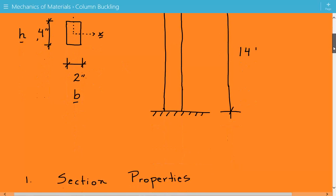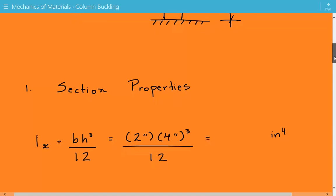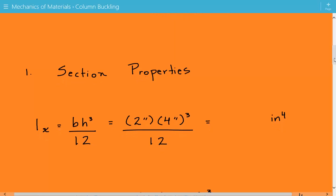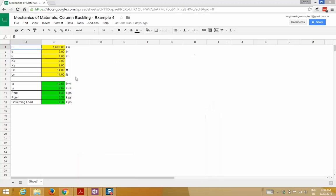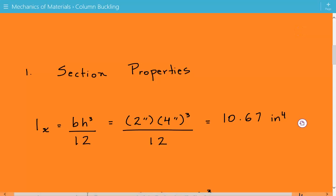First thing we're going to do is calculate the section properties. The moment of inertia about the X axis is Ix = bh³/12, which comes out to 10.67 inches to the fourth power. This spreadsheet is available at engineeringexamples.net.